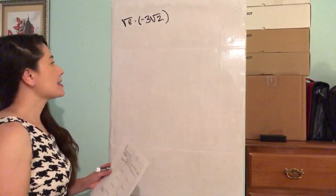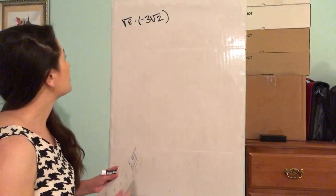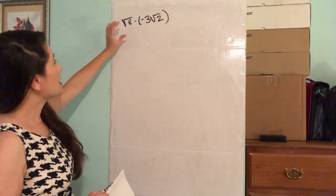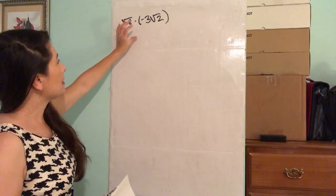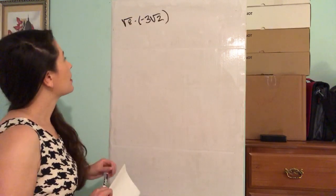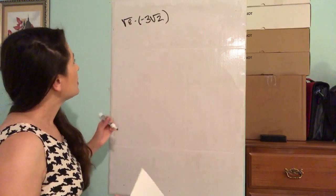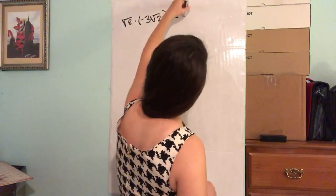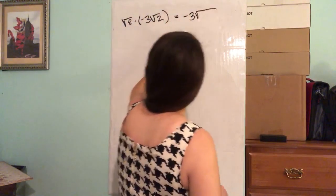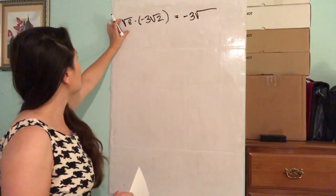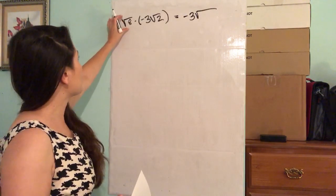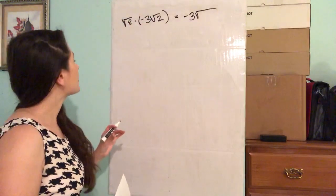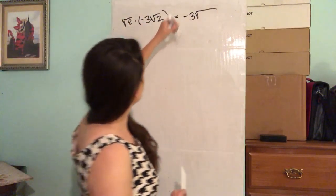Hi guys, so here they're asking us to multiply the radicals. So this is square root of eight times negative three times square root of two. This is going to give us negative three times — we're going to multiply and combine terms that are underneath a radical. So eight times two is 16.